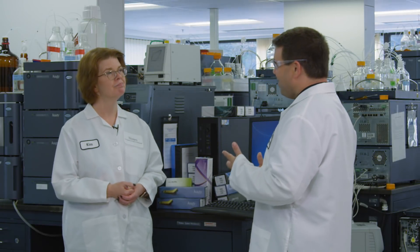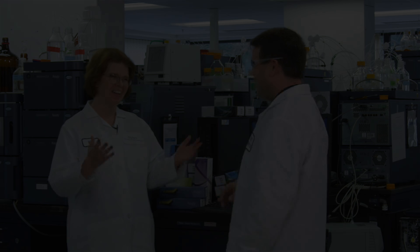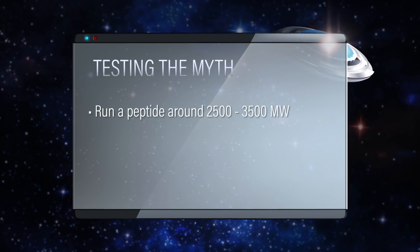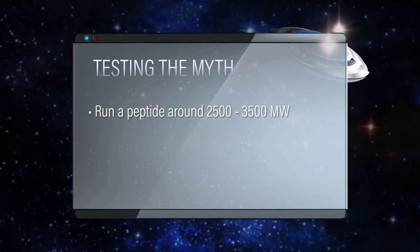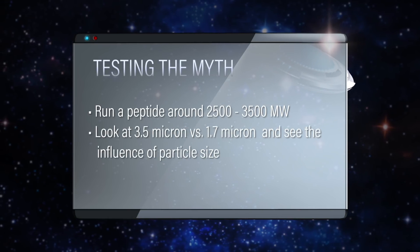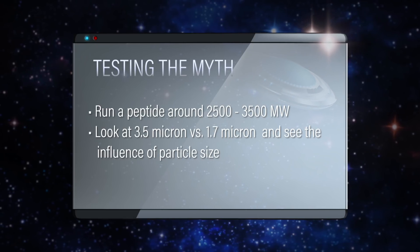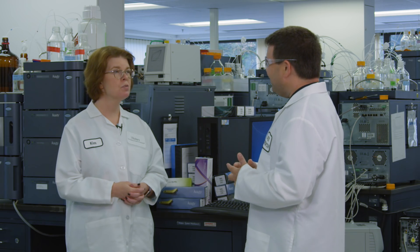That sounds perfect — I love doing van Deemter curves, let me run the first batch. We can also think about particle size and run a peptide around 2,500 to 3,500 molecular weight, then look at 3.5 micron versus 1.7 micron particles to see if particle size has any influence on that molecular weight as well. For small molecules it would, but I'm not too sure about peptides — so it'll be neat to see what the data shows.